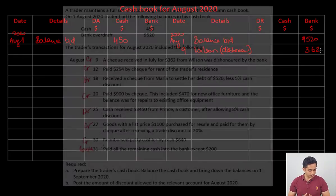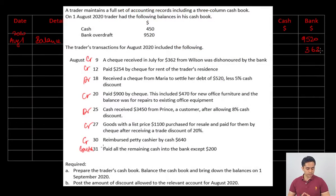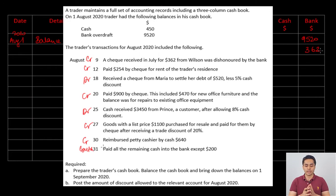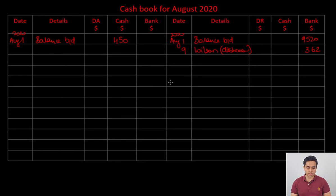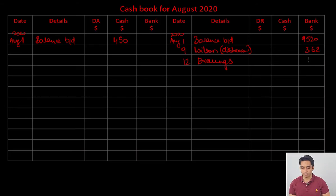August 12: paid a check of 254 for the rent of the trader's residence. The trader's residence is a personal expense, so we cannot record this as rent. Personal expenses have to go to the drawings account. So August 12, details — drawings, amount 254 in the bank column.